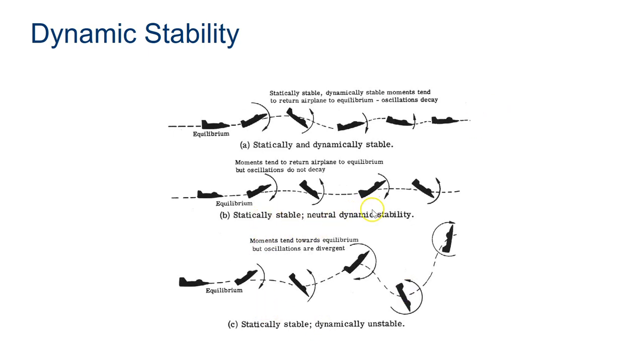Then we have statically stable and neutral dynamic stability. So in this case, the flight path is oscillating just a little bit, but the actual craft itself is, it's oscillating, the pitch is oscillating up and down and up and down and up and down, even though it's pretty close to a straight flight. And the worst of both worlds is if it's statically stable and dynamically unstable, this means that as once that oscillation starts, it just gets worse and worse until you crash.